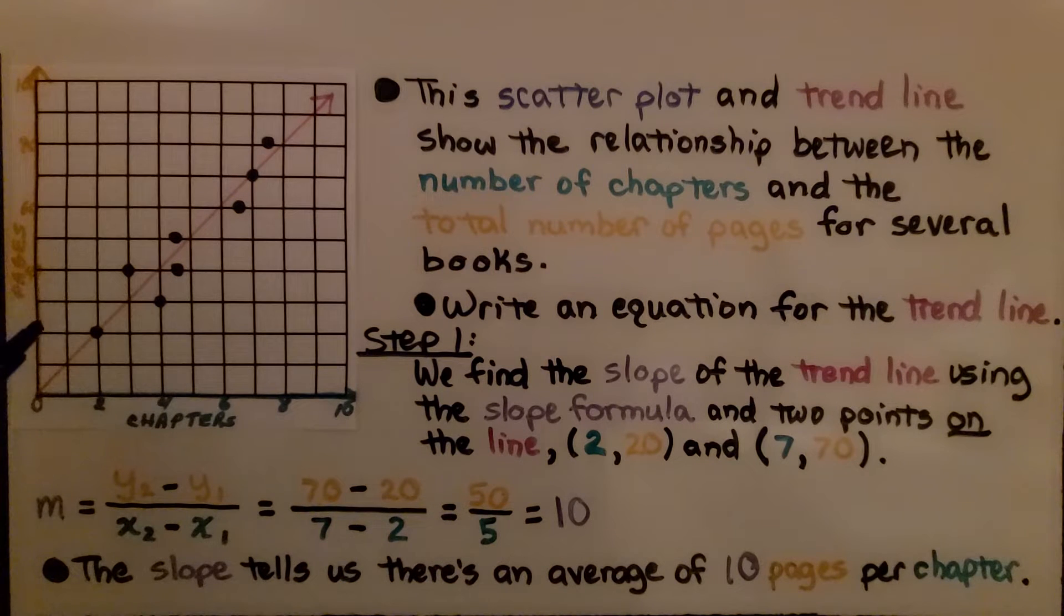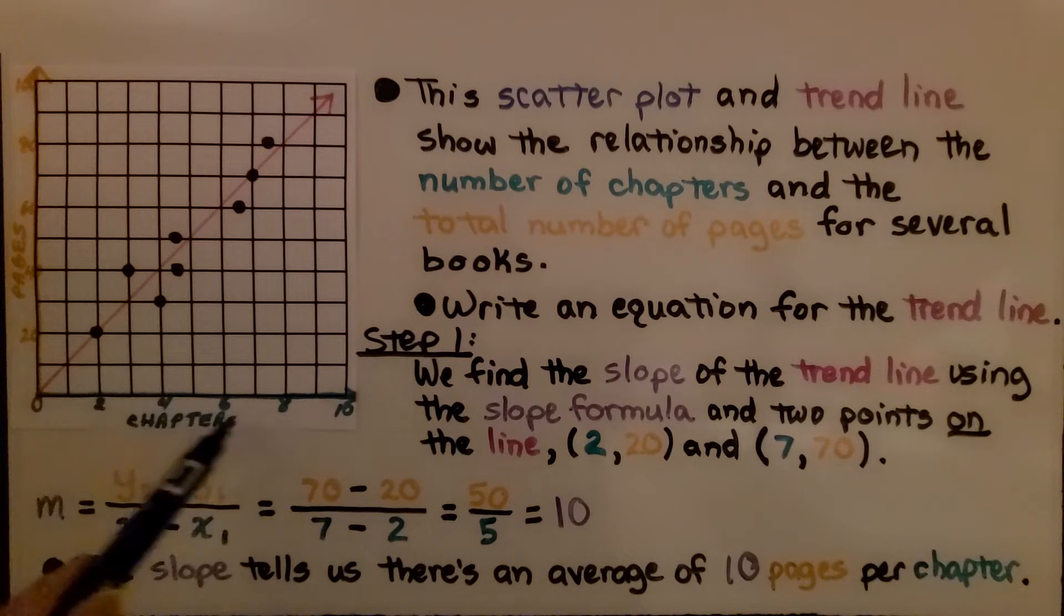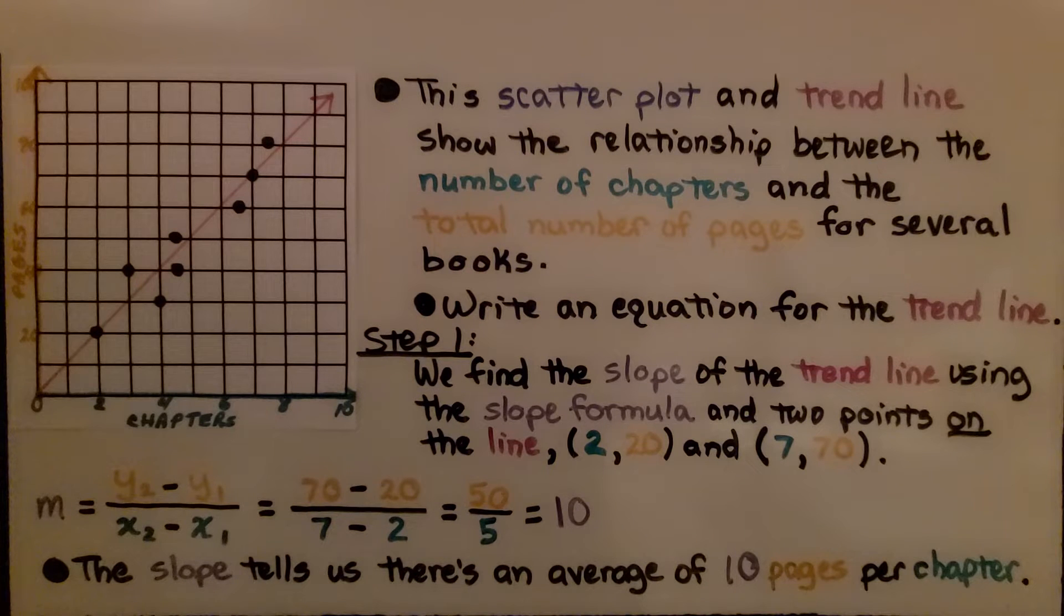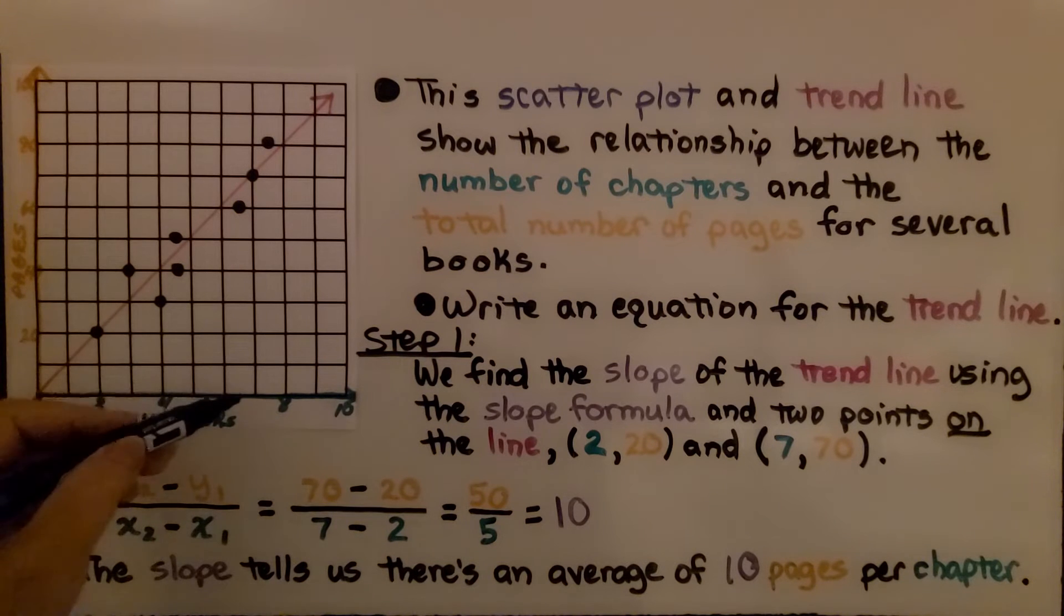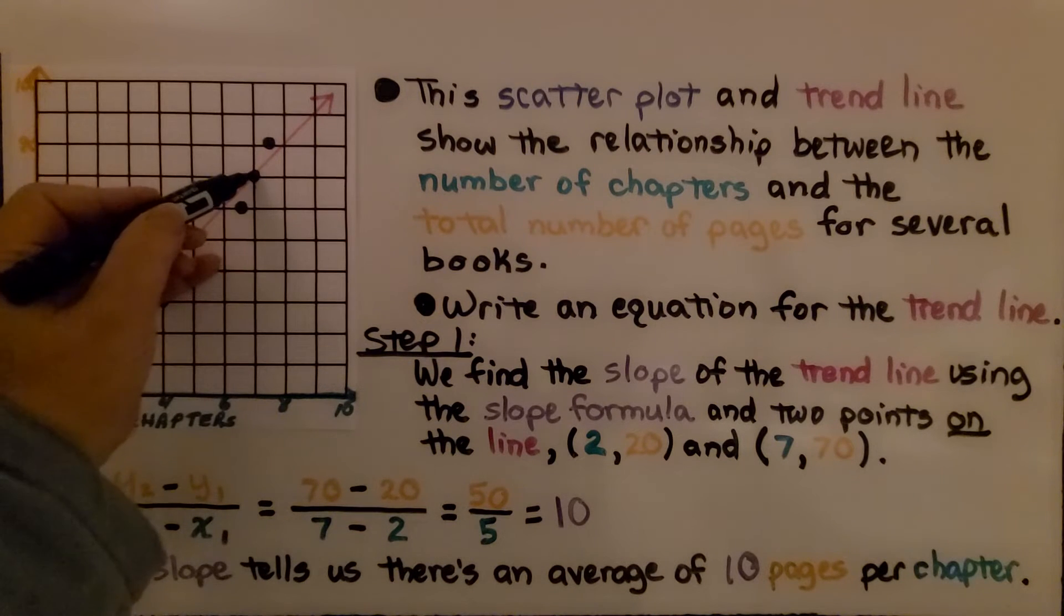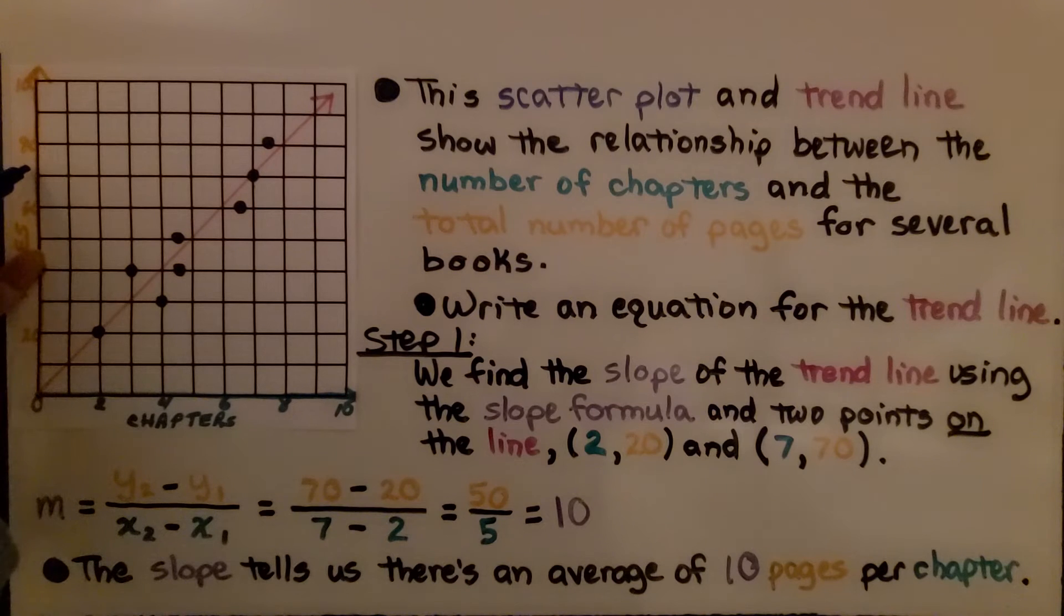This scatterplot and trendline show the relationship between the number of chapters and the total number of pages for several books. We need to write an equation for the trendline. Step one, we find the slope of the trendline using the slope formula and two points on the line. We can see we have a point here at 2 for x, 20 for y, and we have another point at 7 for x and 70 for y.